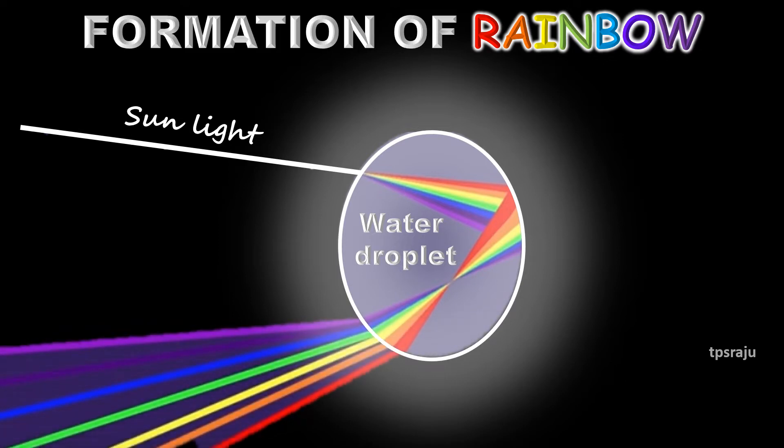When the ray of light enters into water drop, refraction takes place. Due to this refraction, white light is dispersed into its spectrum of colors, violet being deviated the most and red the least. These different colors reach the opposite side of the water drop and each color is reflected back into the drop because of total internal reflection.